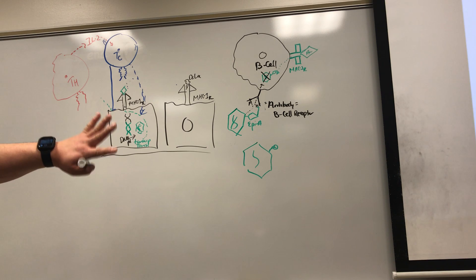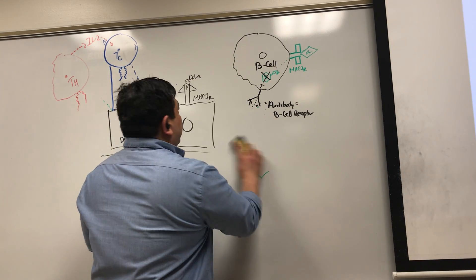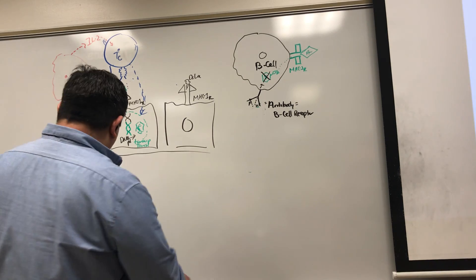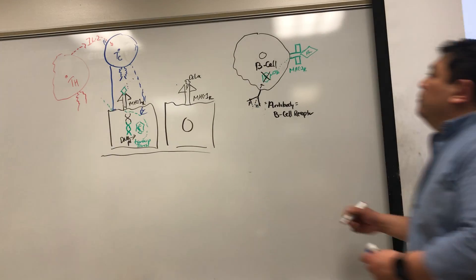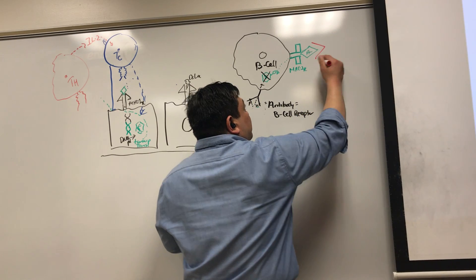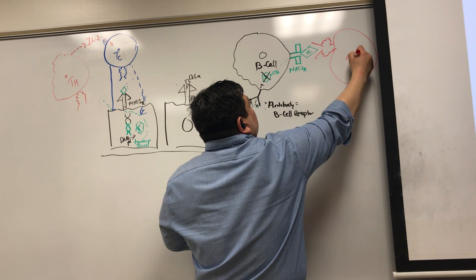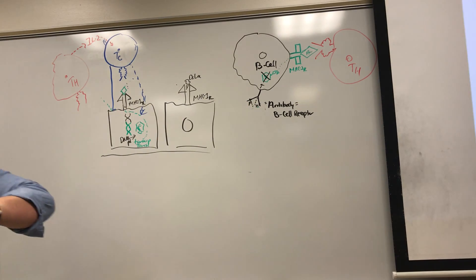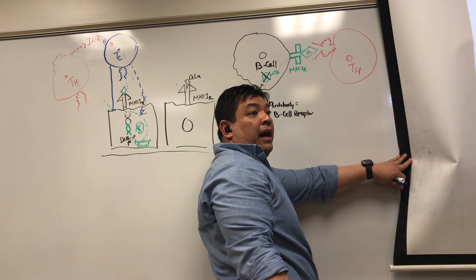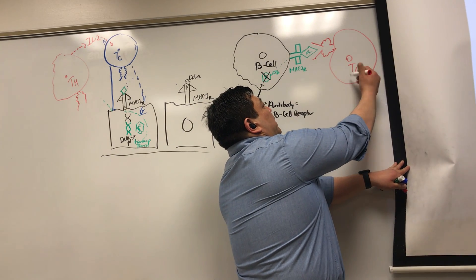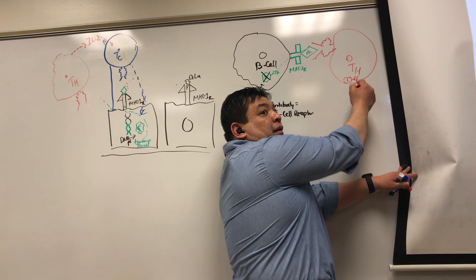Now, once it kills it and displays it, it's not active yet. Once it kills it and displays it, it needs a little bit of help. Where does the help come in? Helper T-cells right here. Helper T-cells are going to come around and it's going to have a T-cell receptor. Helper T-cell receptor should match, right here, the epitope that's displayed on MHC2. So, this is MHC2, helper T-cells CD4. Does my rule of eights match? Yeah. MHC2, two times four, eight.